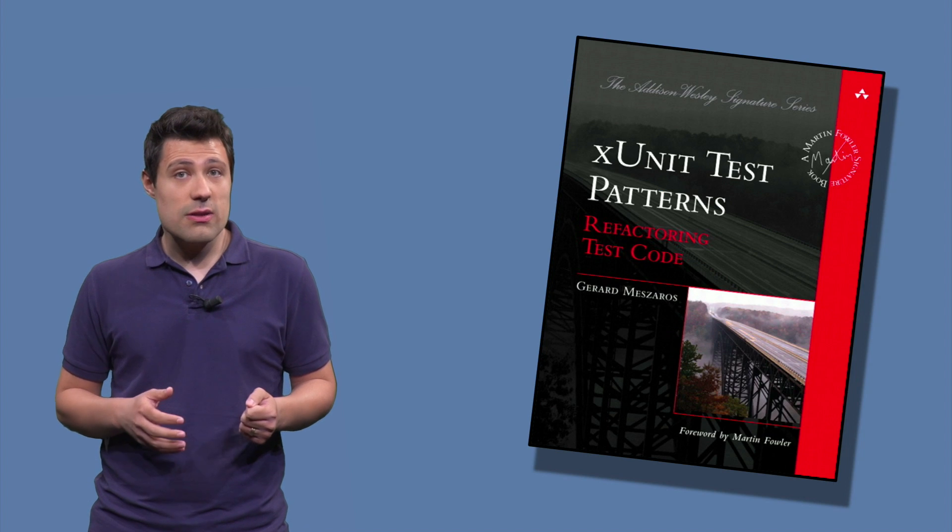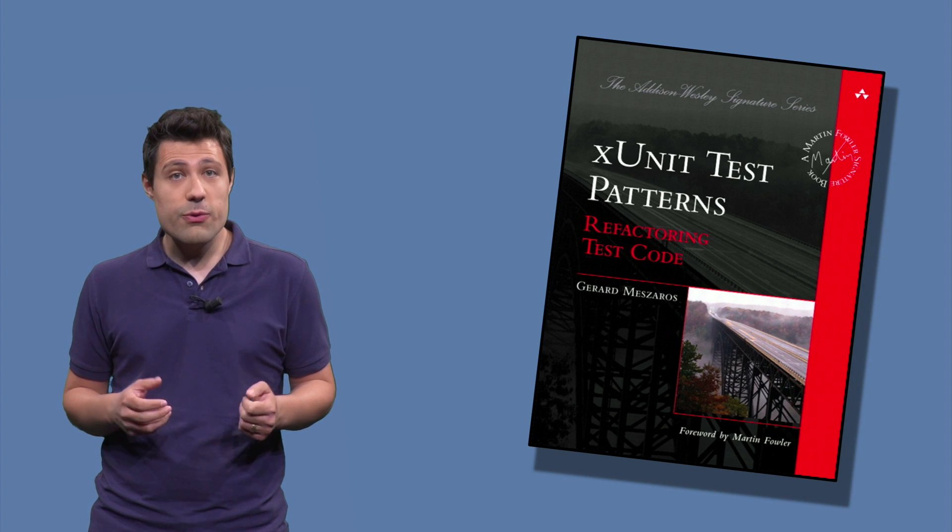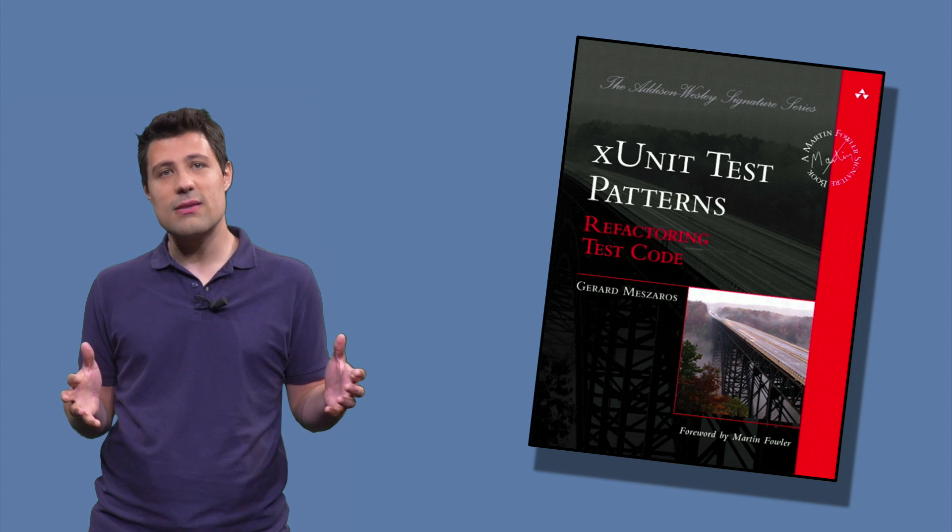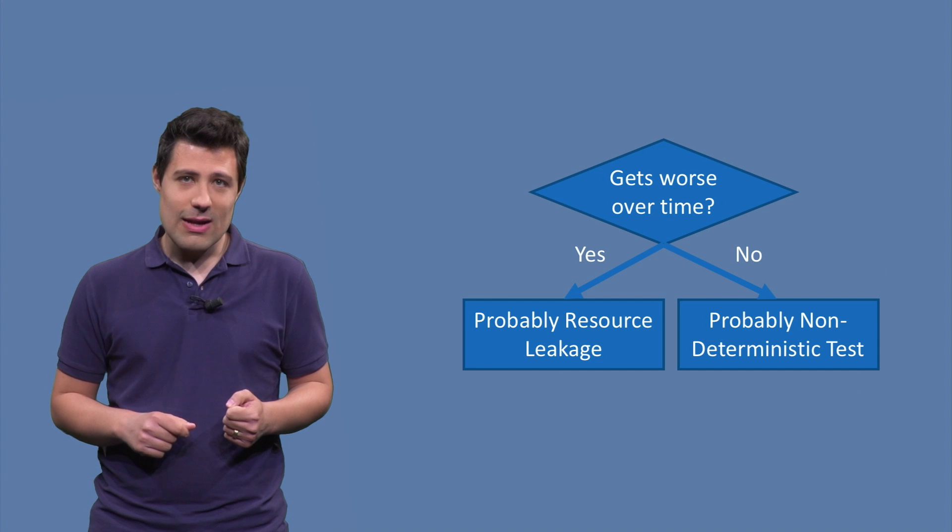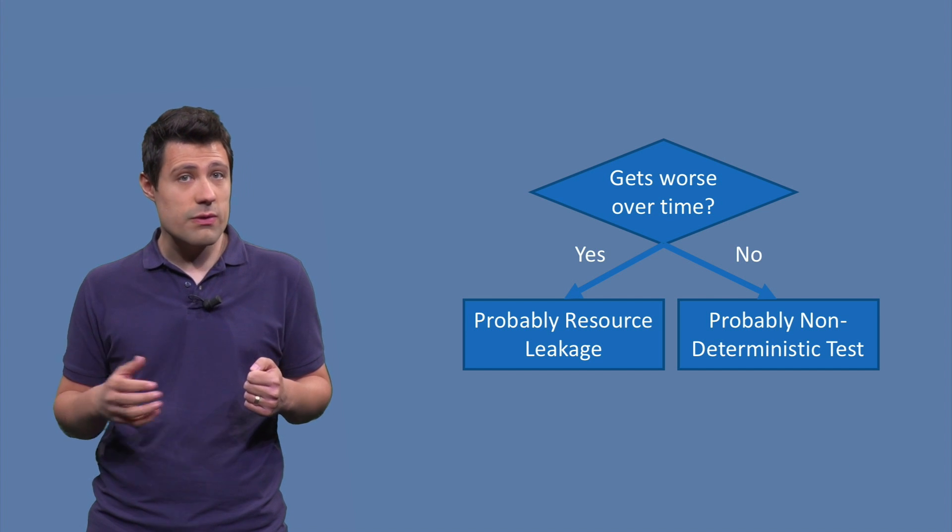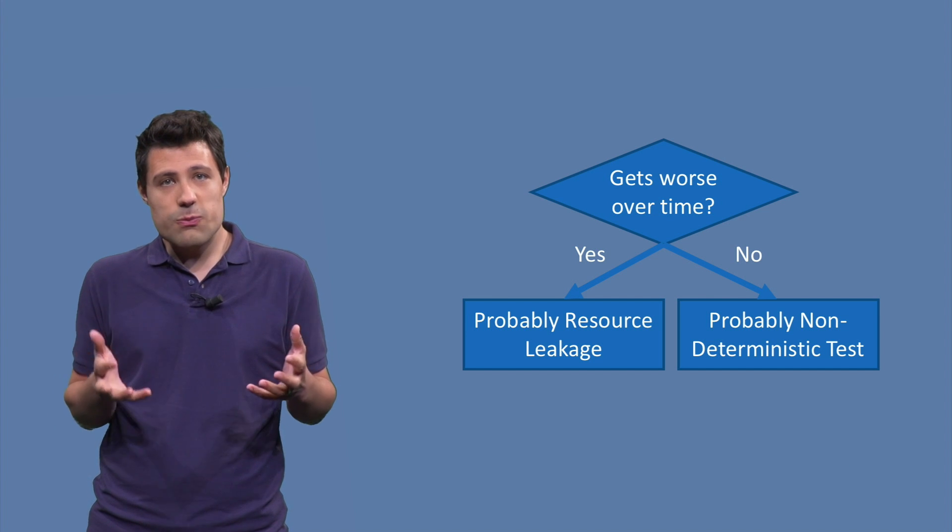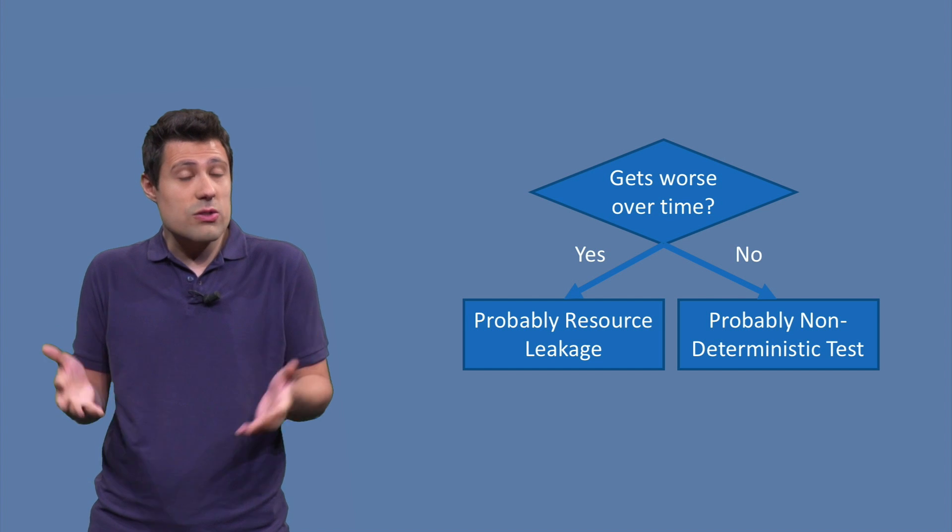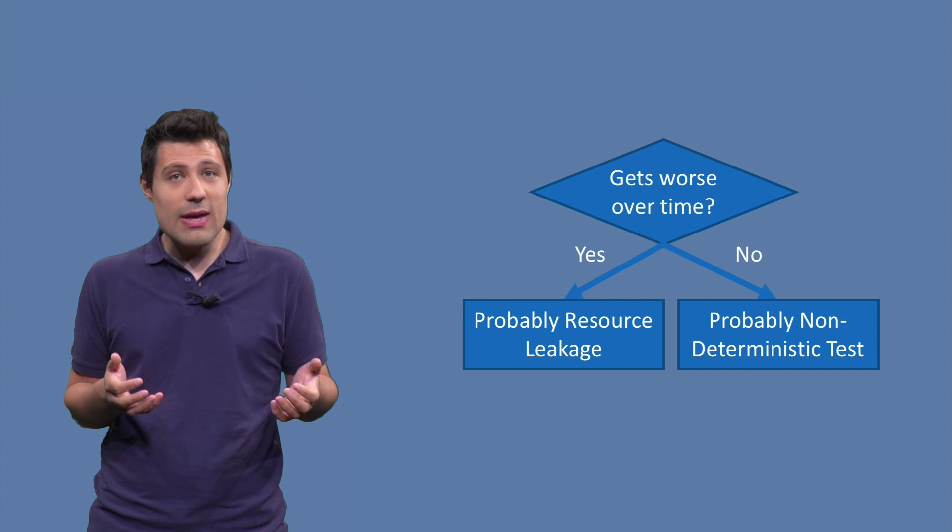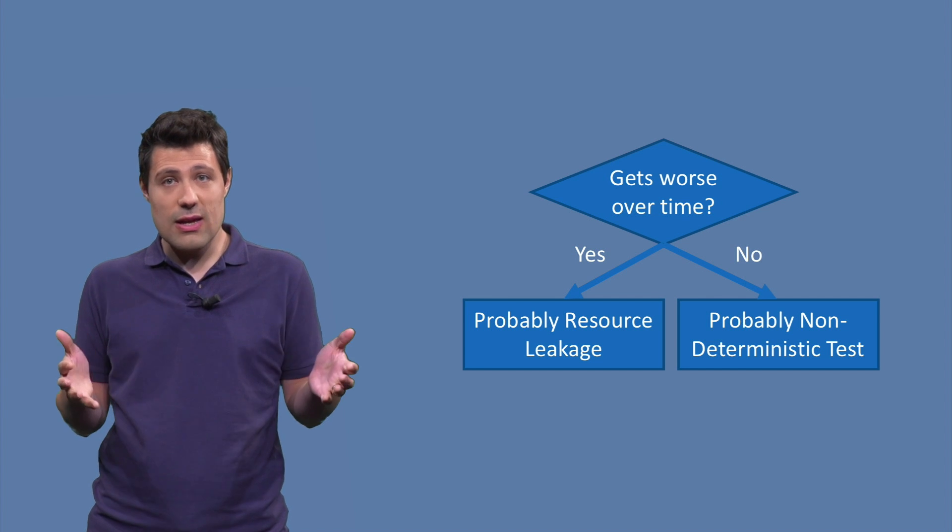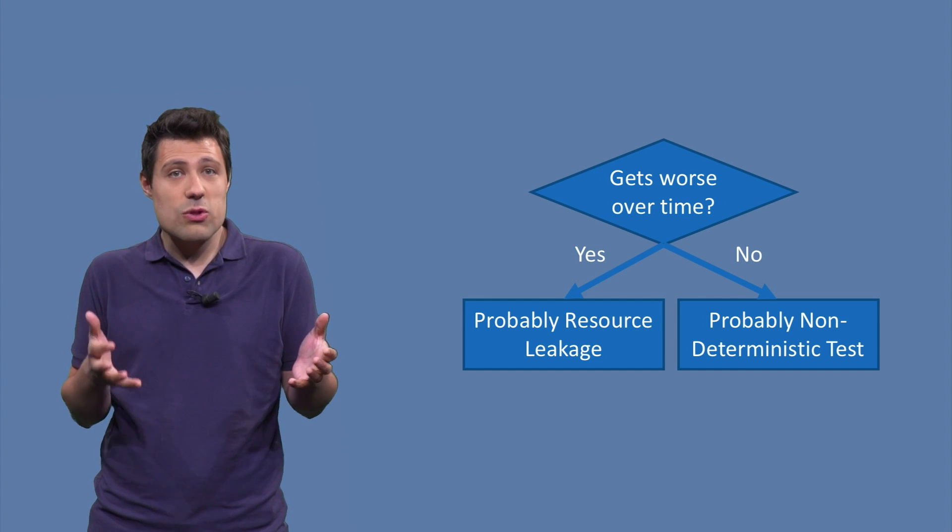In the XUnit Test Patterns book, the author provides us with a huge decision table to understand and tackle the cause of a flaky test. For example, does the flaky test get worse over time? Getting worse in terms of speed, the test gets slower and slower. If that is true, this means that you probably have a resource leakage that makes the test become slower over time.